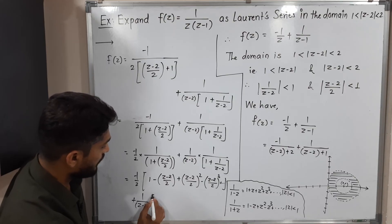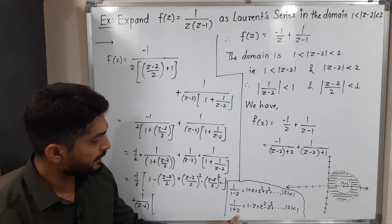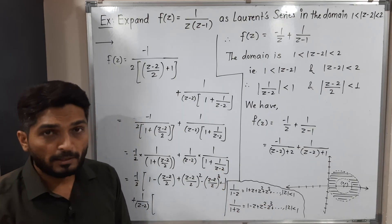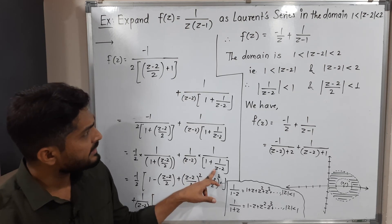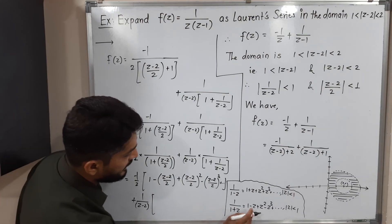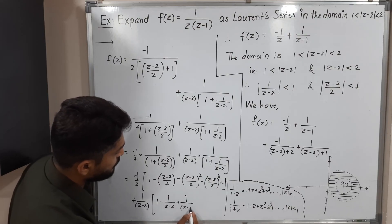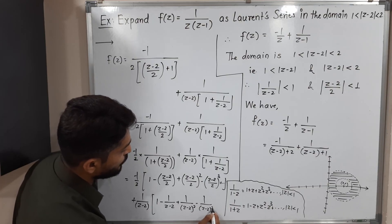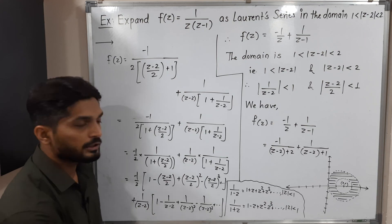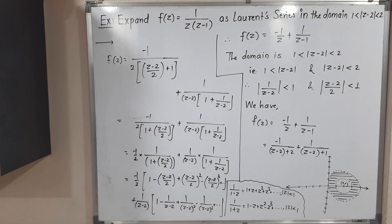For the second term 1/(z-2) times 1/(1 + 1/(z-2)), at the place of z we have 1/(z-2), and |1/(z-2)| < 1 is satisfied. Expanding: 1/(z-2) times [1 - 1/(z-2) + 1/(z-2)² - 1/(z-2)³ + ⋯]. This is the required Laurent series. You can multiply through by 1/(z-2) to get the final explicit form.